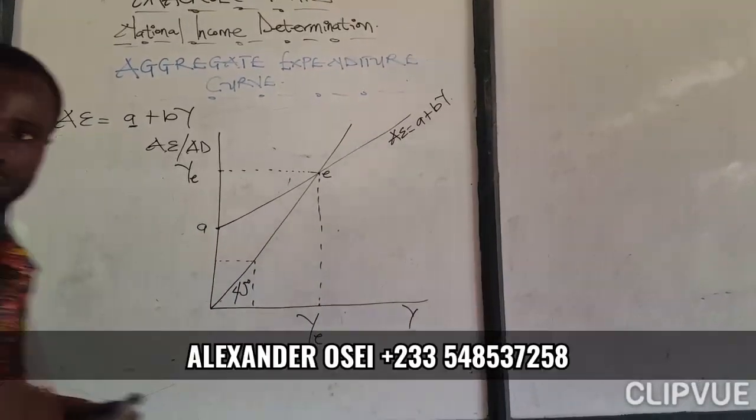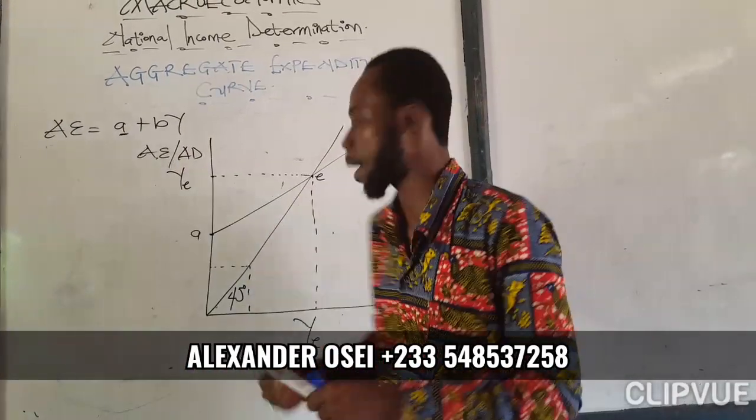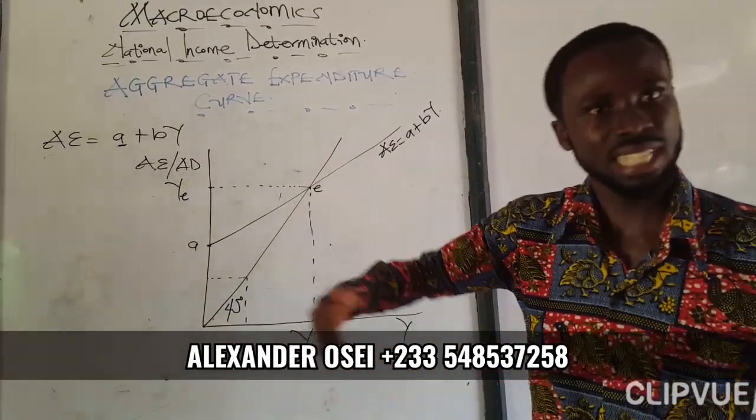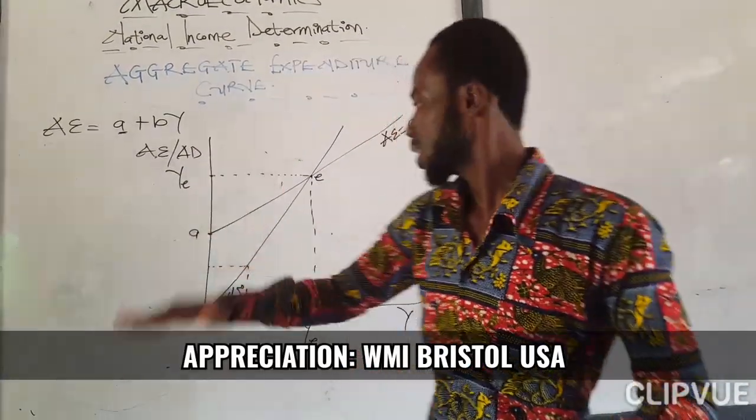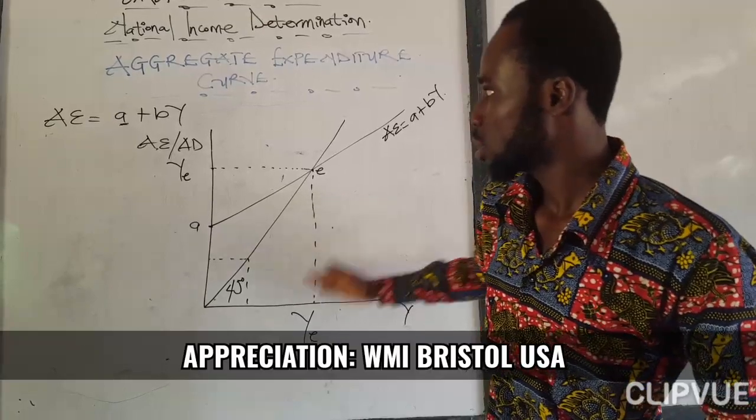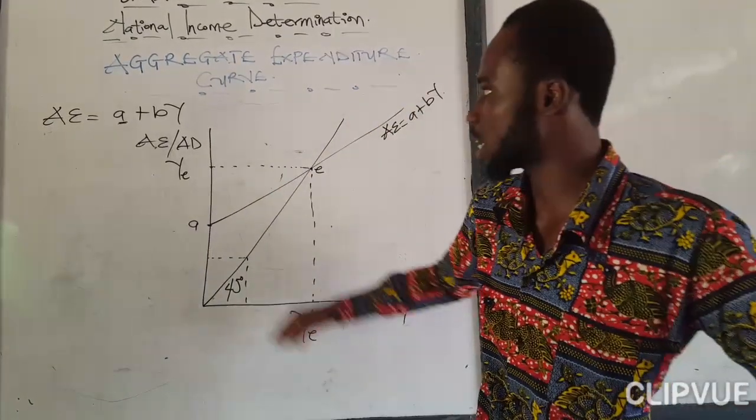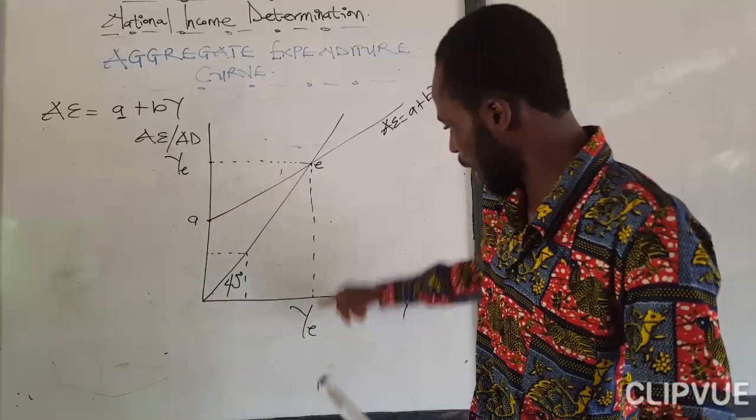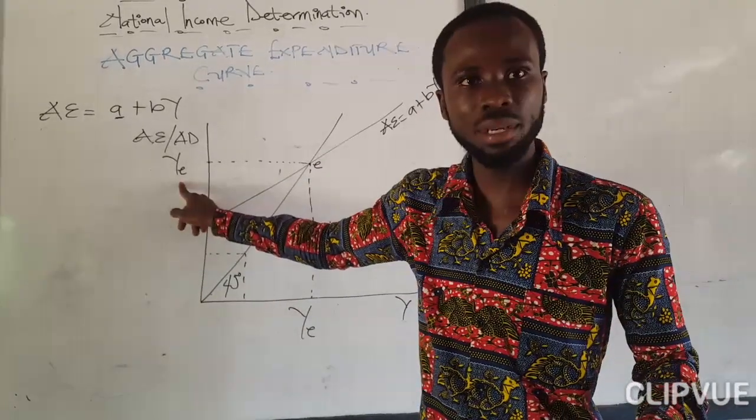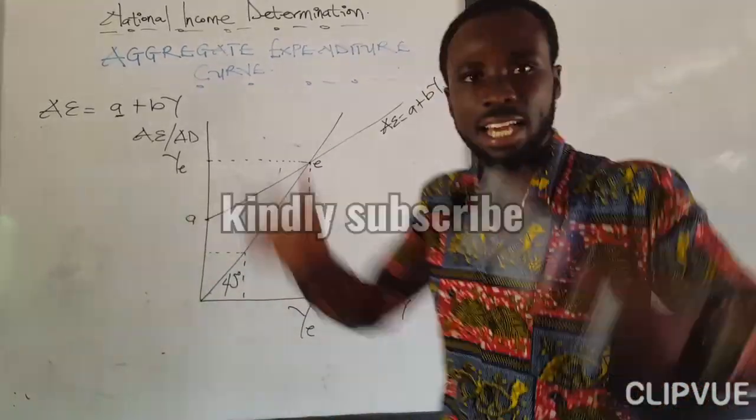So supposing a question tells you to calculate for the equilibrium national income. After doing the computation that we did in the previous video, this time you are going to represent it. This time you are going to draw the aggregate expenditure curve, then you represent the equilibrium national income here and here. I hope it makes sense. So that is how it is.